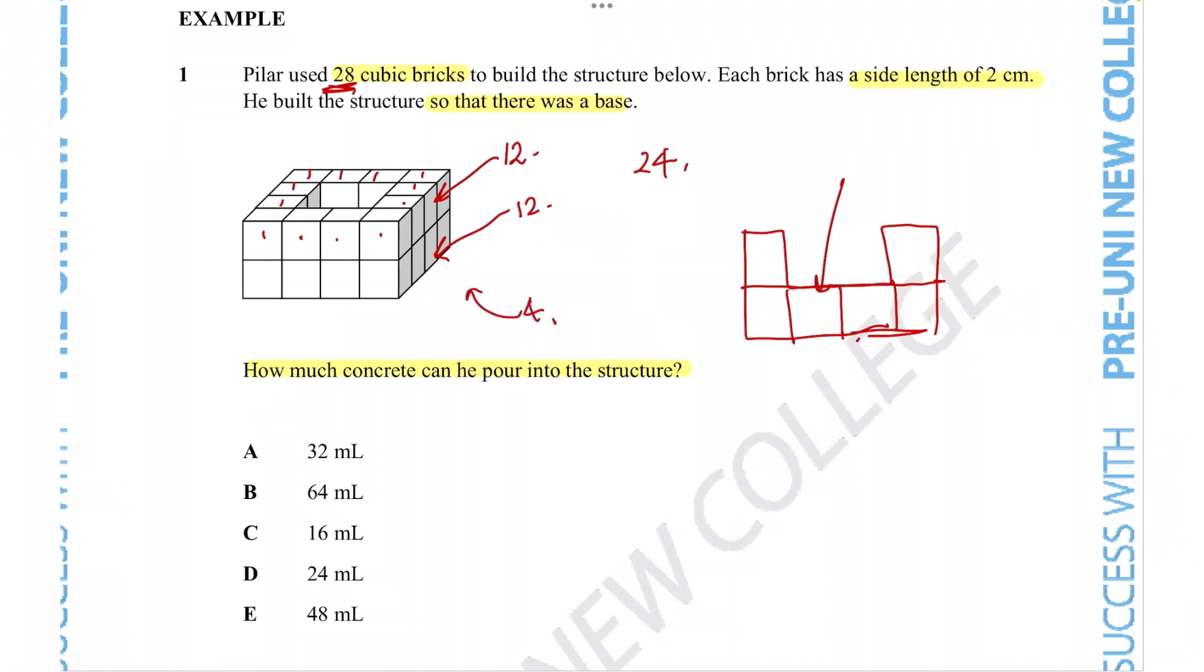So it's very important to read the question thoroughly because if you just assume that the structure or the cross section looks like this without that bottom layer, then you would get a very different volume of concrete that you can pour in since the amount that you can fit the concrete has changed. So bearing that in mind, we now know what the structure looks like.